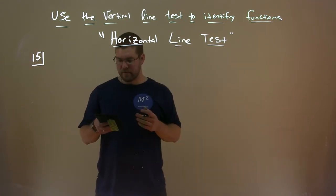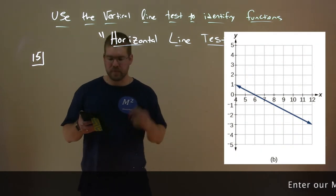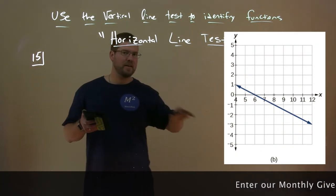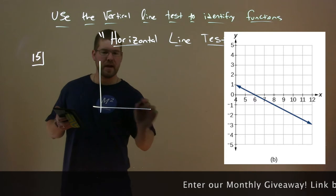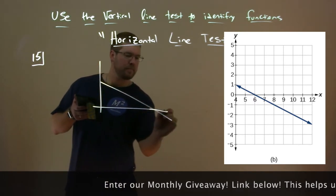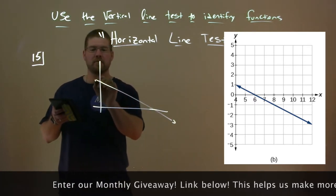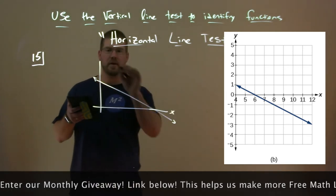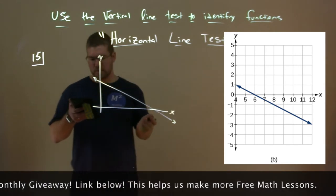What about our second function here? Well our second function is a graph. It kind of looks like this. It's going down. It kind of goes on forever. This is our xy-axis right here. Is this function one-to-one?